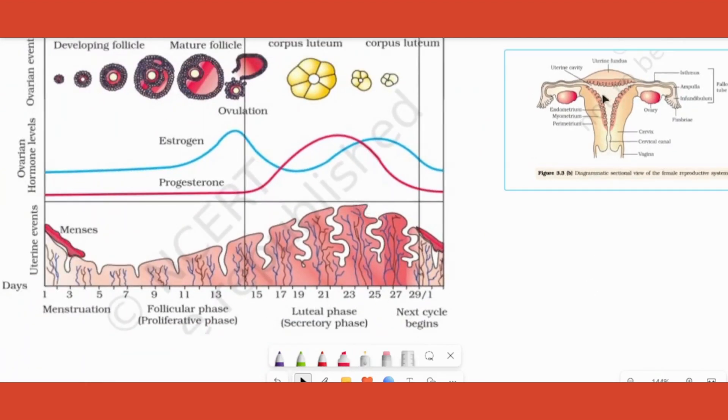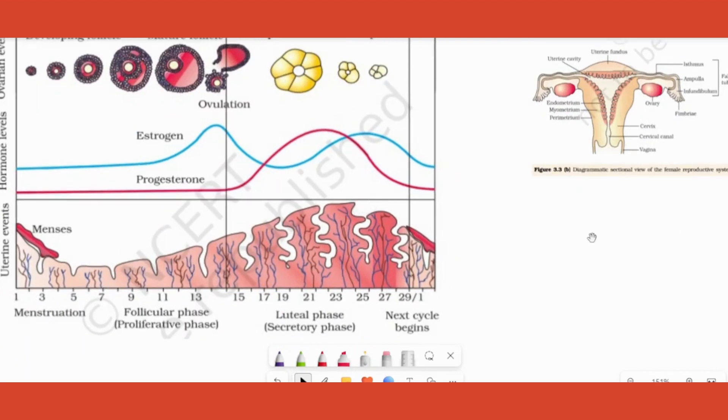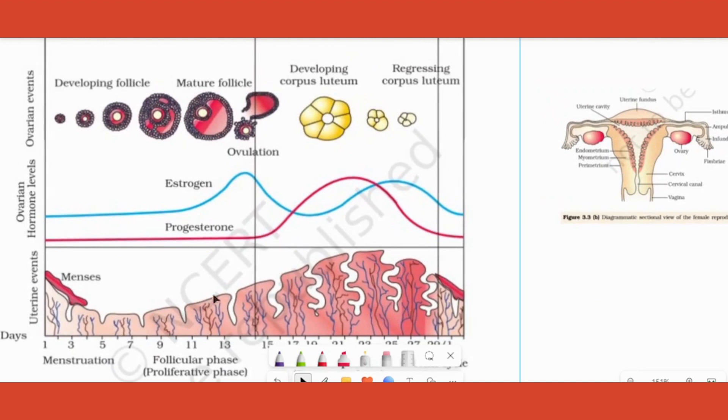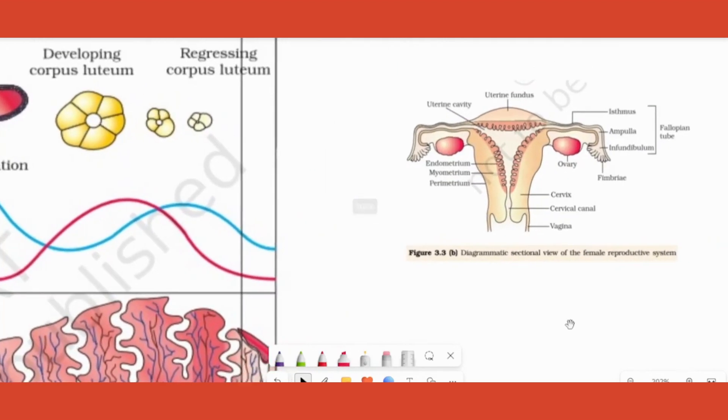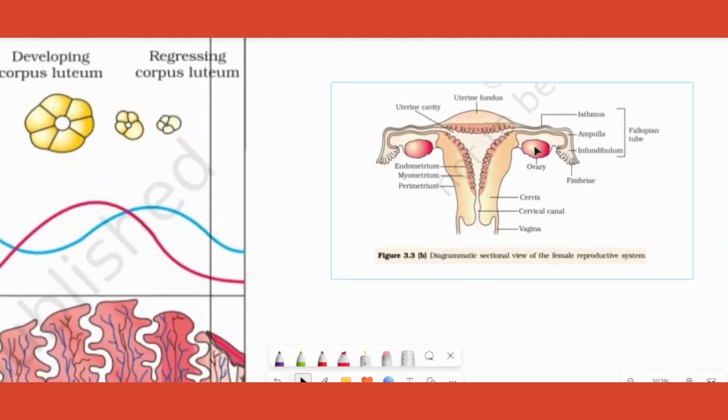In the uterine lining, not so much of a change is happening further. Instead, what could be happening in the uterine lining? The thickening of the layer can happen beyond that. Nothing else is happening.